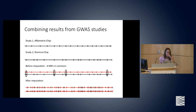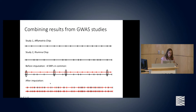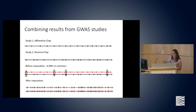Returning to the example of two studies genotyped on different chips: before imputation they have very few SNPs in common. But after imputation, all the missing pieces are filled in and all SNPs can be jointly examined through a meta-analysis.